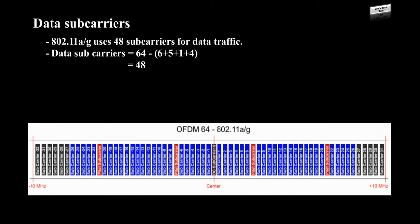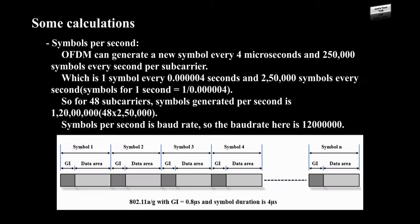Data subcarriers: 802.11a or 802.11g uses 48 subcarriers for data traffic. Data subcarriers = 64 subcarriers minus (11 guard subcarriers + 1 DC subcarrier + 4 pilot subcarriers) = 48.